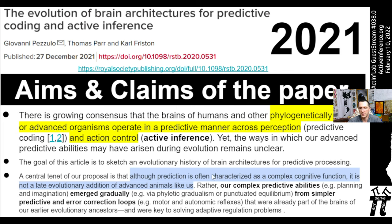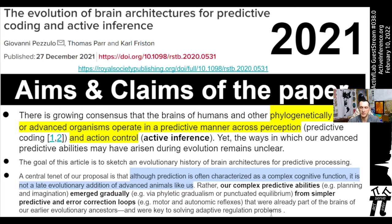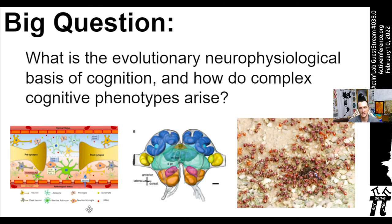A central tenet is that prediction is not a late evolutionary addition of advanced animals. Rather, our complex predictive abilities — e.g. planning and imagination — emerged gradually, via phyletic gradualism or punctuated equilibrium, from simpler predictive and error correction loops such as motor and autonomic reflexes. These were already part of the brains of our earlier evolutionary ancestors and were key to solving adaptive regulation problems. This paper takes a predictive processing and active inference perspective on functional aspects, rather than mechanistic ones like bioelectricity.